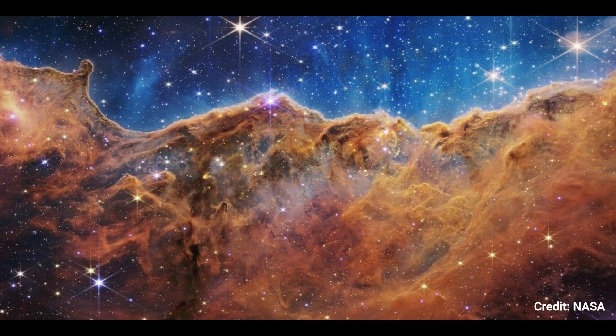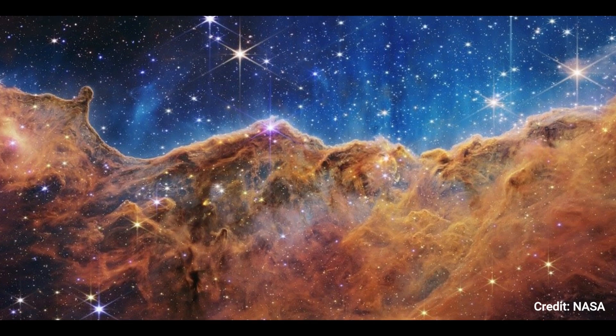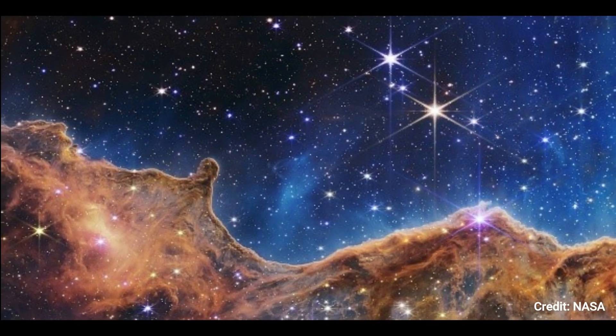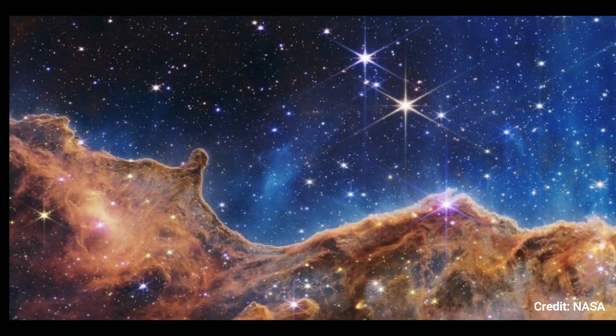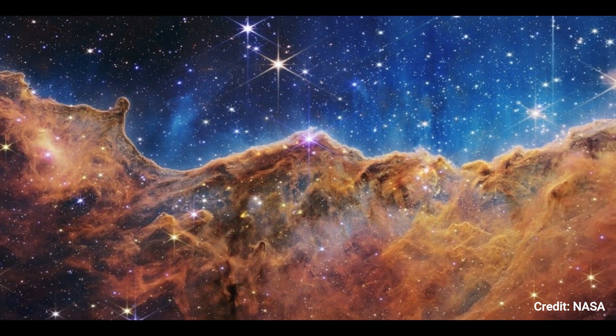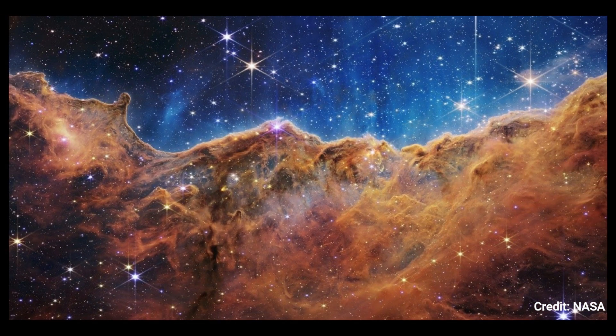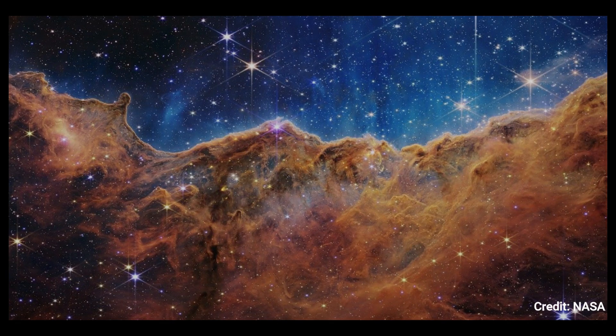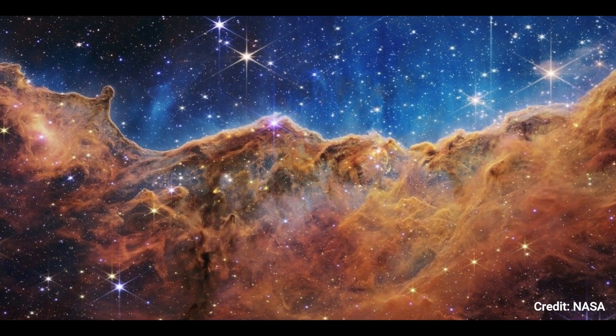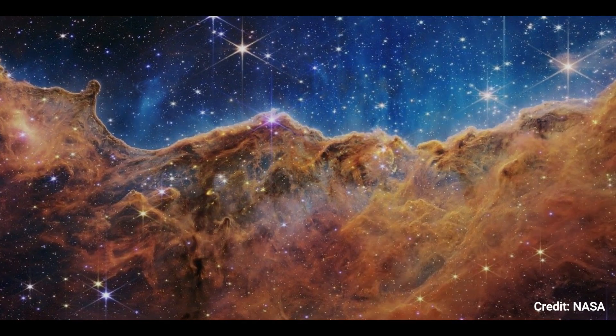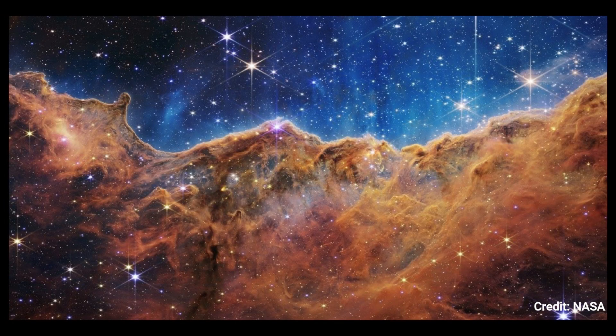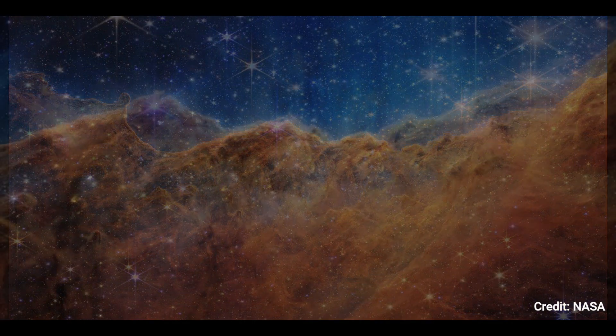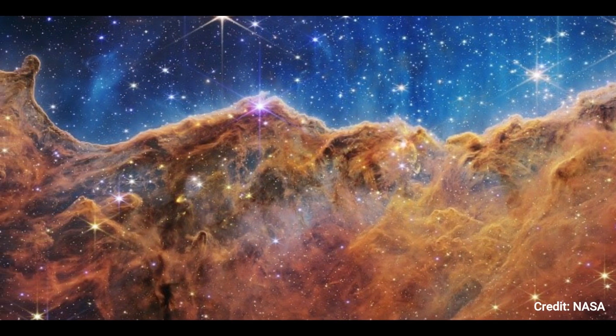This image, captured in infrared light by NASA's James Webb Space Telescope's near-infrared camera, exposes previously occluded areas of star birth. The cosmic cliffs are the boundary of a massive, gaseous cavity within NGC 3324, approximately 7,600 light-years distant. The intense UV radiation and stellar winds from extremely large, hot, young stars located in the core of the bubble, above the area visible in this image, have carved the cavernous area from the nebula. These stars' high-energy radiation is sculpting the nebula's wall by progressively chipping it away.